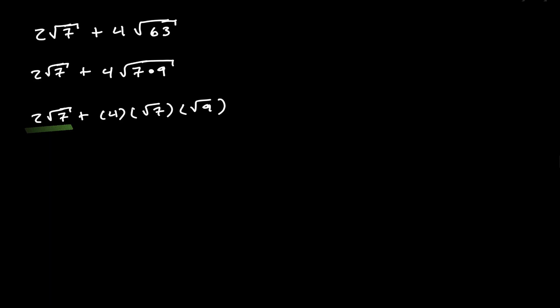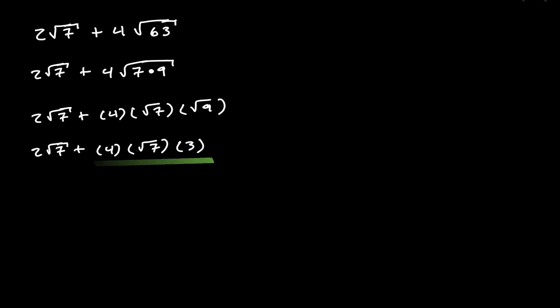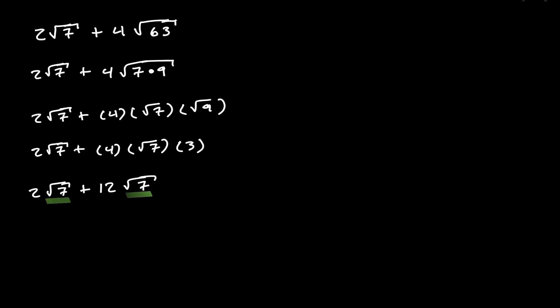Instead of writing the square root of 9, let's substitute it with 3. In the term on the right-hand side, notice that there are 3 multiplications, and the order doesn't matter for multiplication, so let's multiply 4 times 3, which gives us 12. Now note that after the simplification, we were able to write down the same value inside the square root, so we can add the values in front: 2 plus 12 gives us 14. We're going to end up with 14 square root of 7.